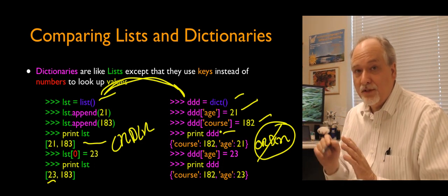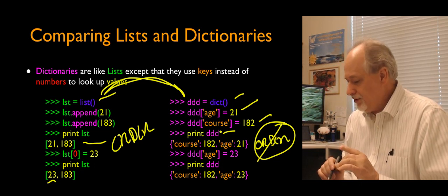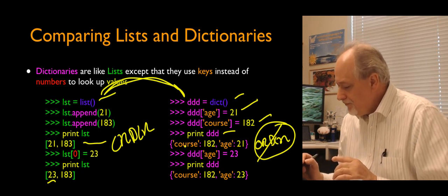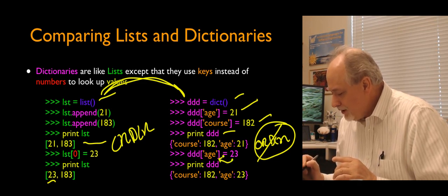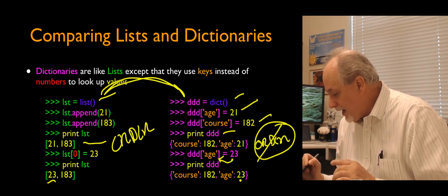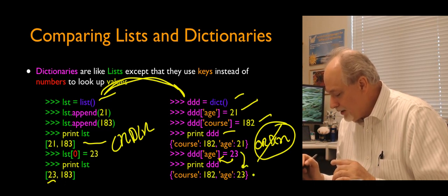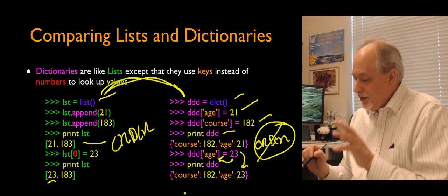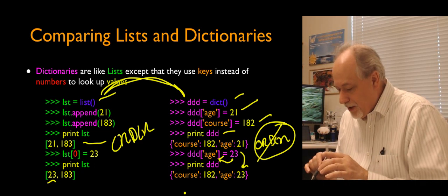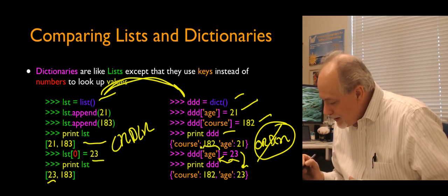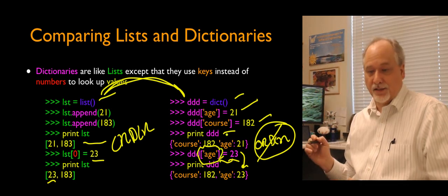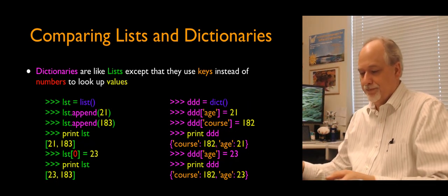We'll soon be writing programs that use both. If I say ddd sub age equals 23, that will change the 21 to 23. You can look something up and change the value in either a list or a dictionary — how you do it is just a little bit different.